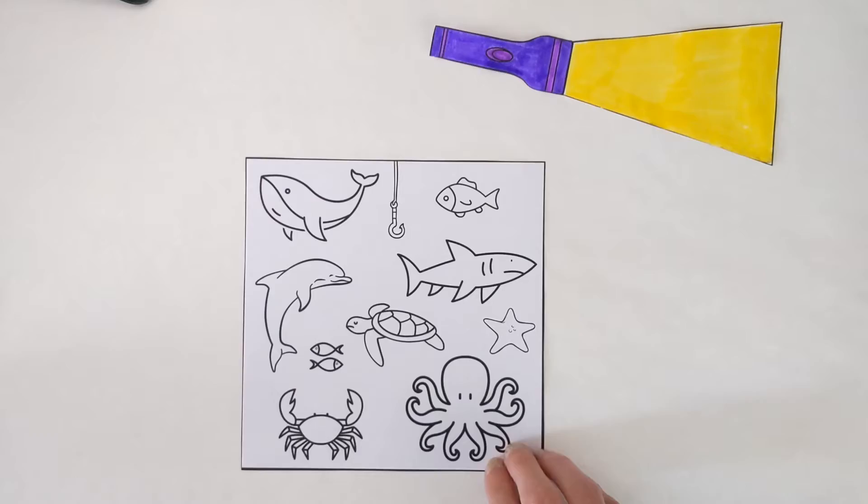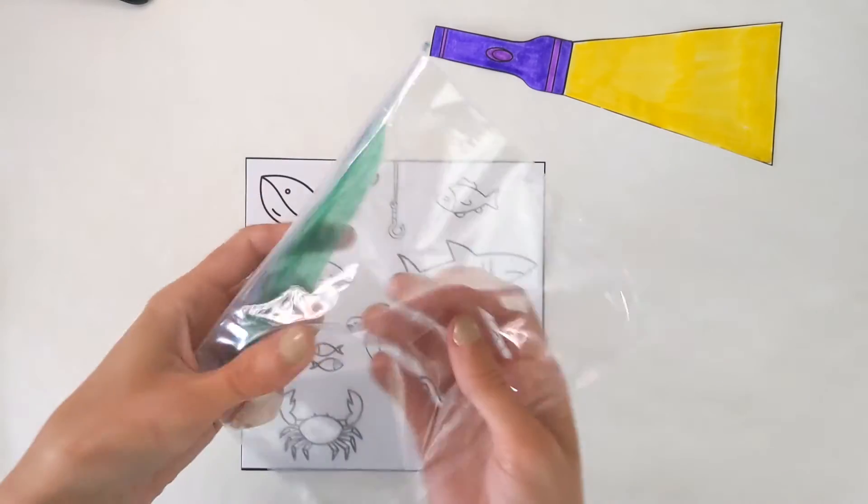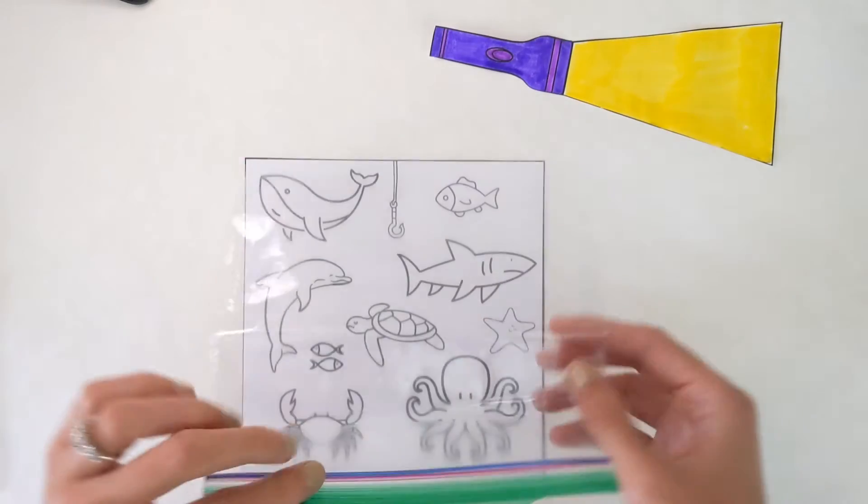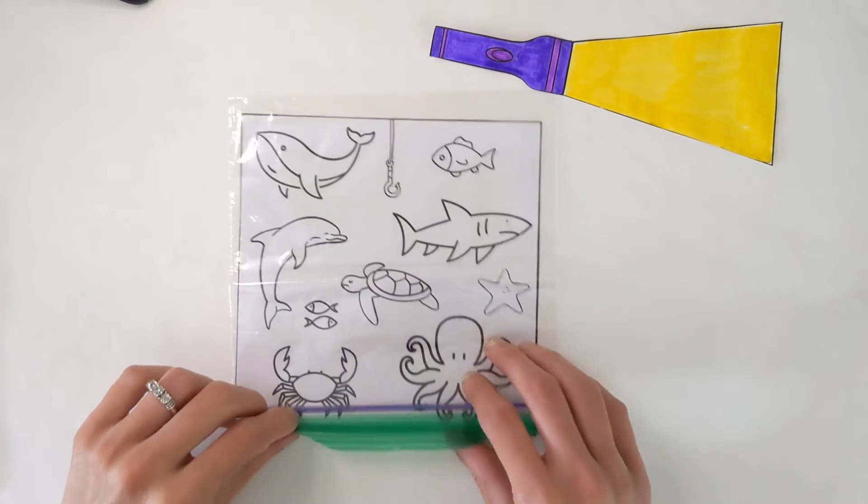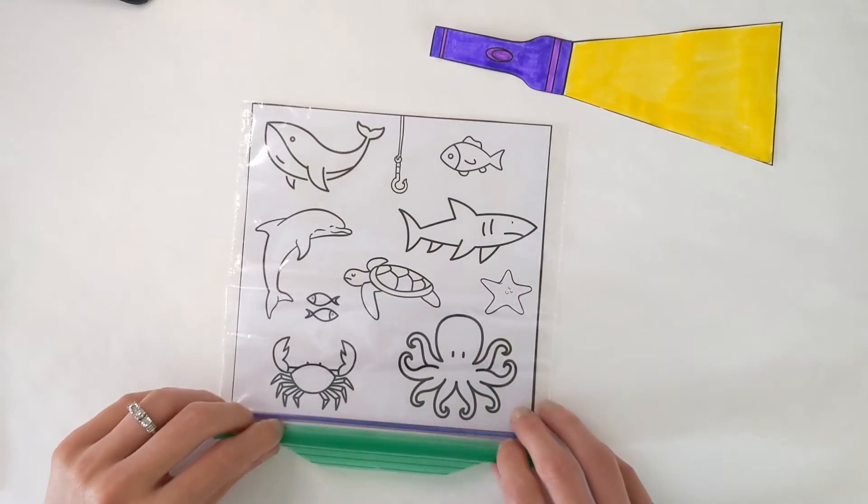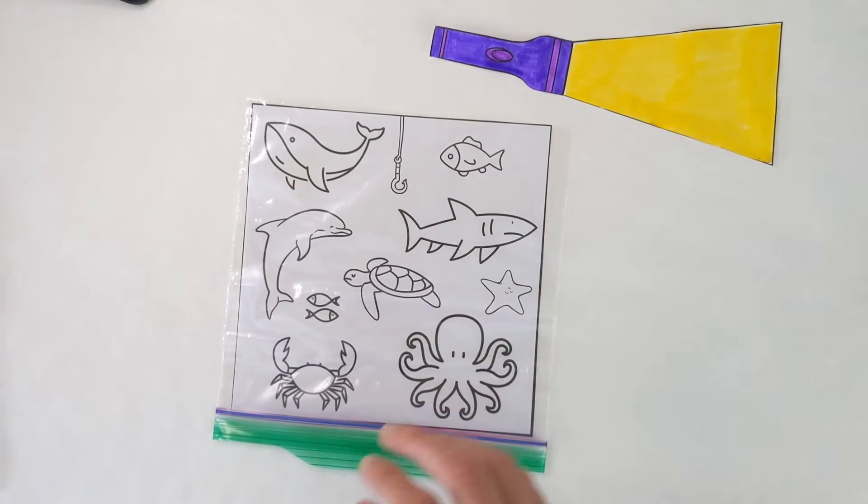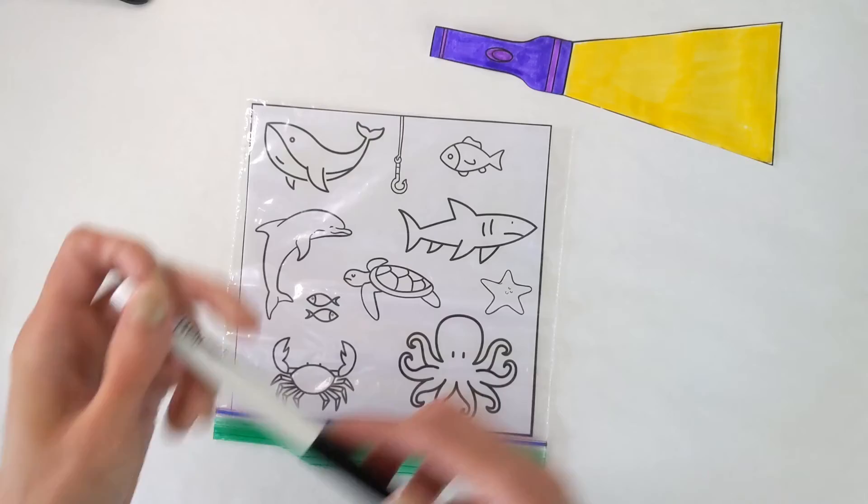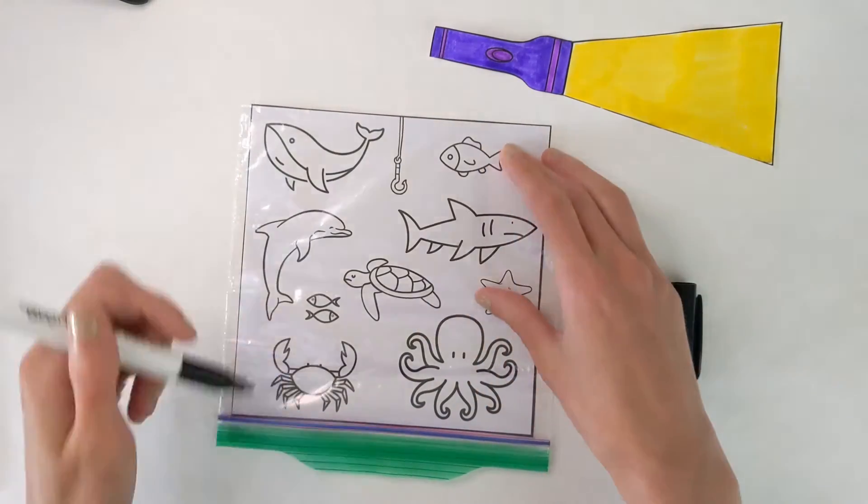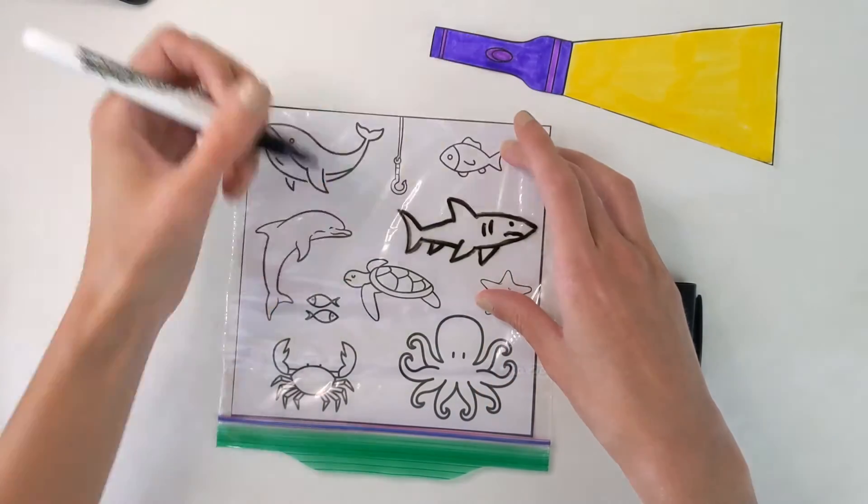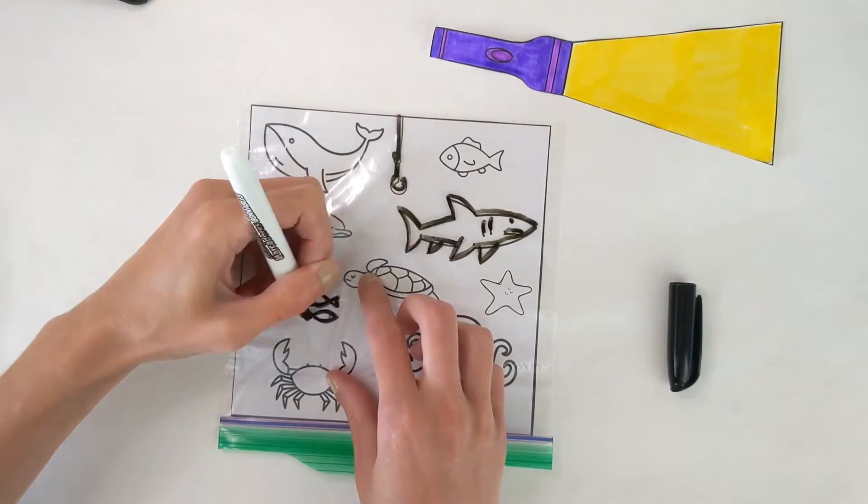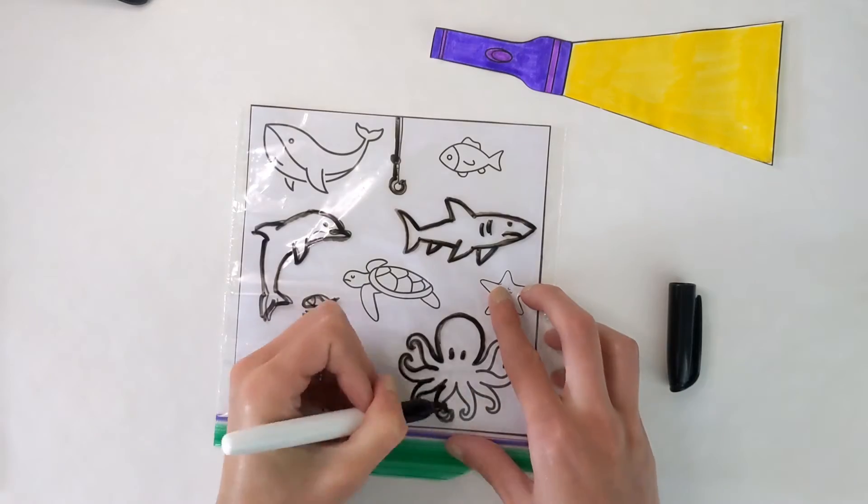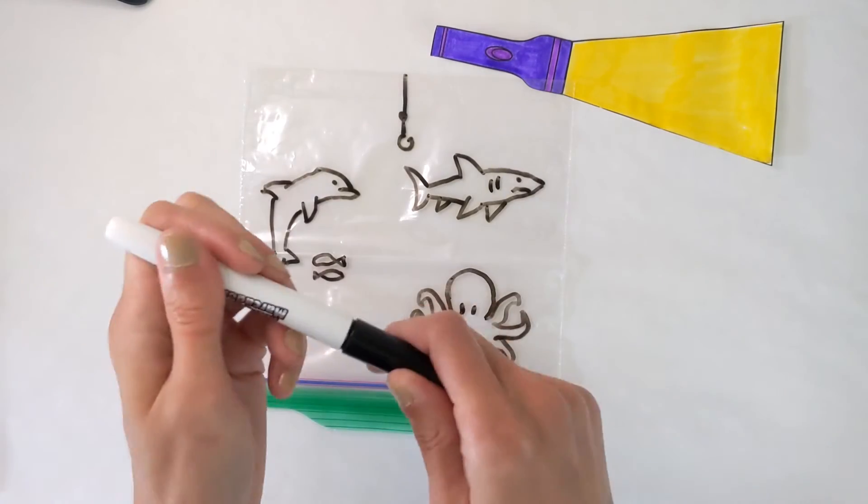For step two, I'm going to place the plastic bag over the animal outlines, with the bag's opening facing down. Then, I'll take my dry erase marker and start tracing the animals onto the plastic bag. I'm going to trace the shark, the hook, the fish, the dolphin, and the octopus. But feel free to draw your own animals.